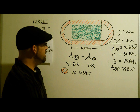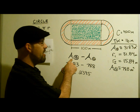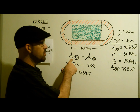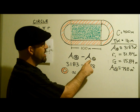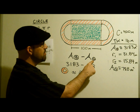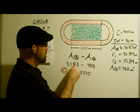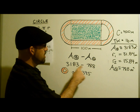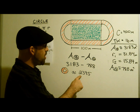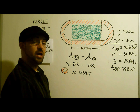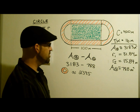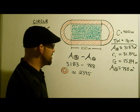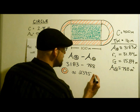We subtract the area of the big circle by the area of the small circle to get approximately 2395 meters squared. Don't forget your meters squared.